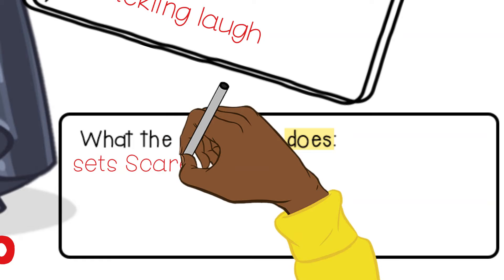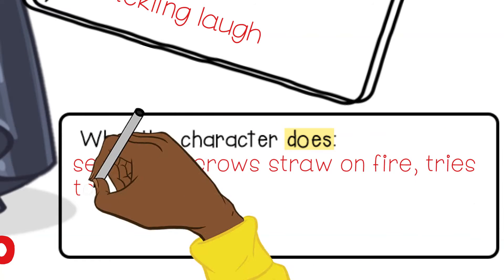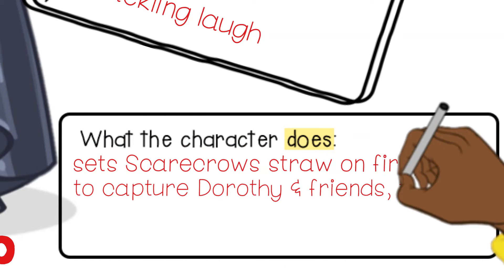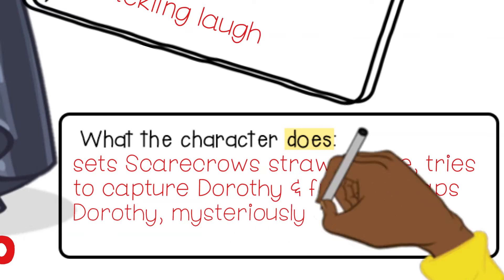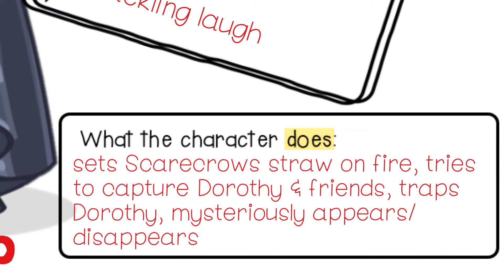Like when she sets the scarecrow's straw on fire, or tries to capture them in the forest with her flying monkeys. She also traps Dorothy in the dungeon of her castle. And to make matters worse, she'll appear and disappear out of nowhere.